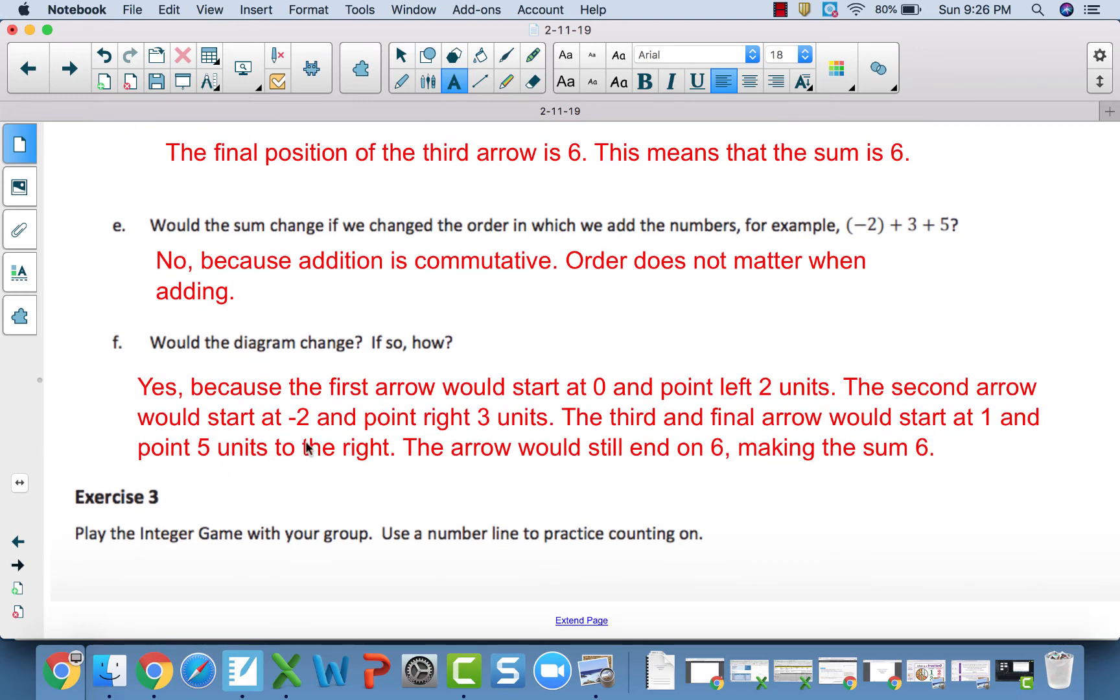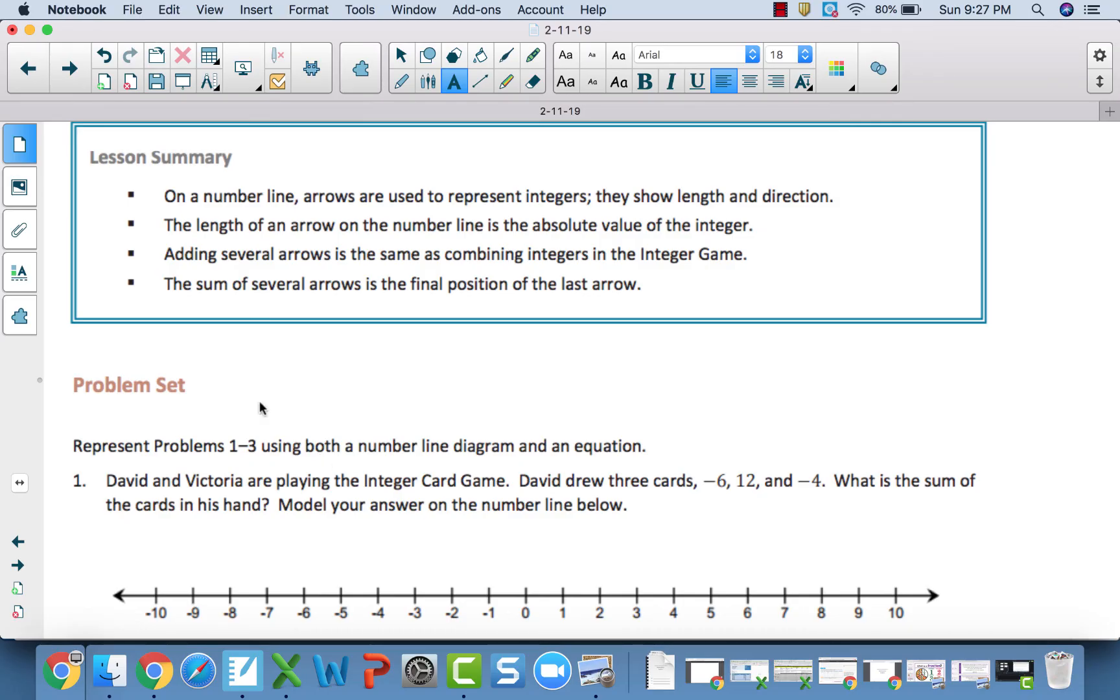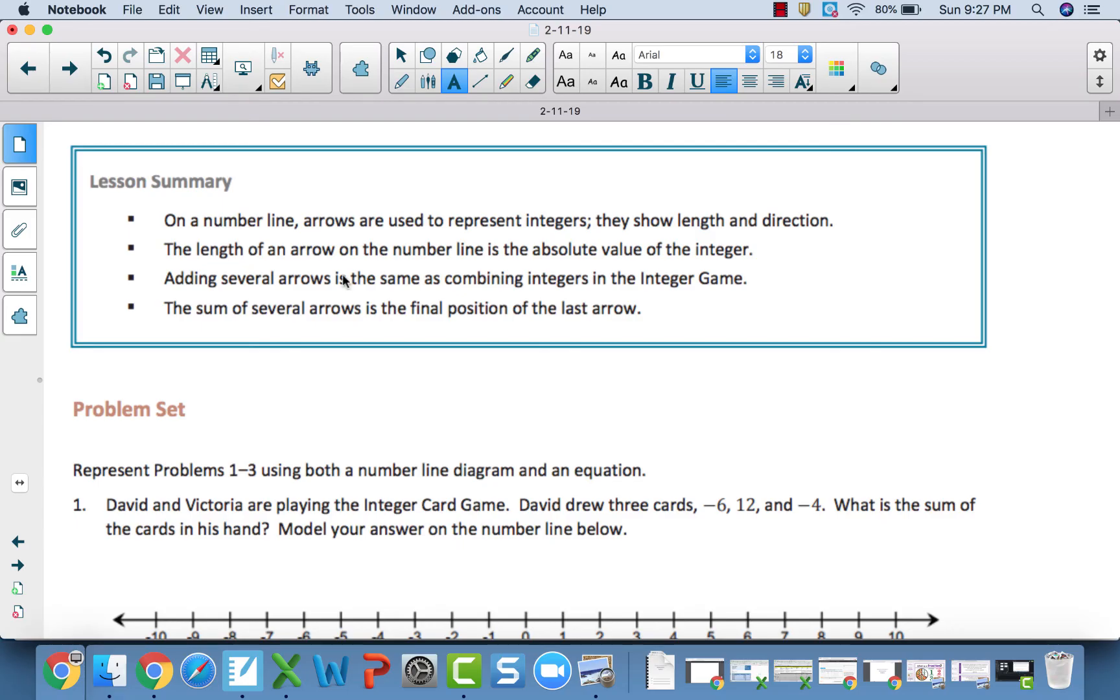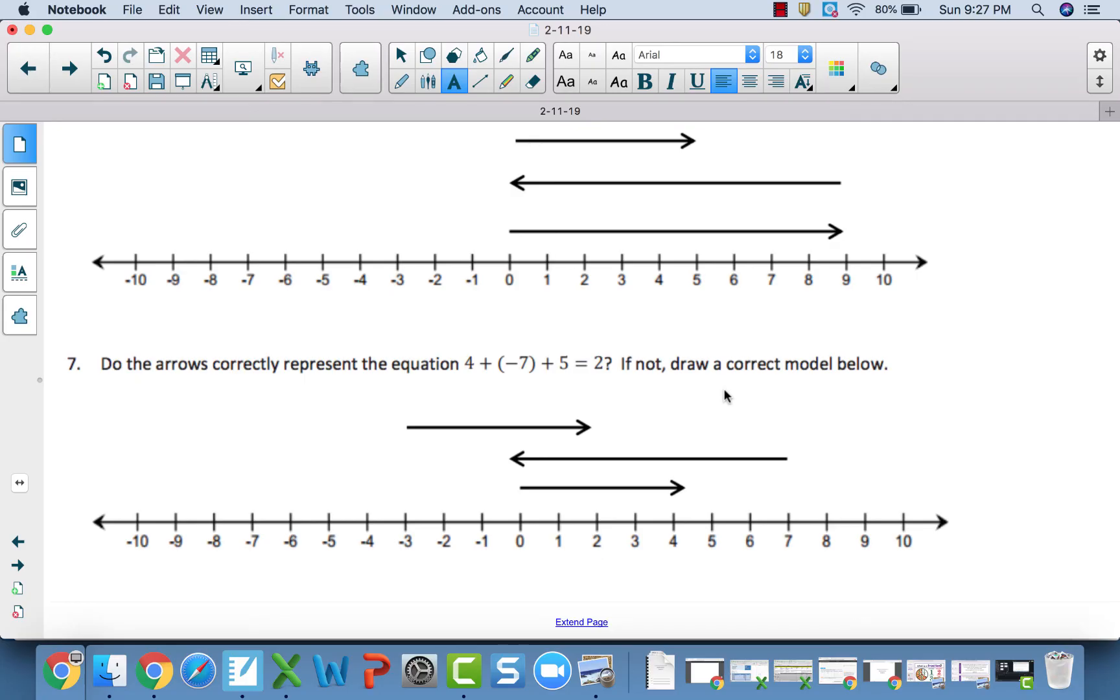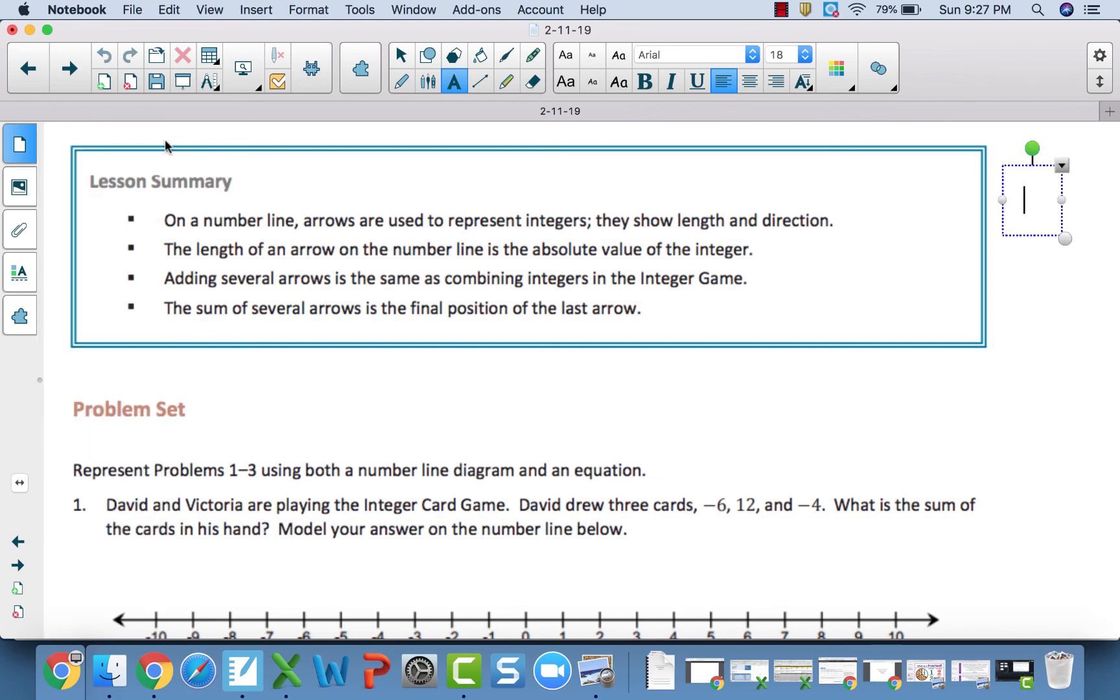Now, we're going to skip this part of the integer game. And we are going to move forward into the problem set. So, go through and answer these seven problem set questions. Just a reminder, before you start, you have a lesson summary up here. Arrows, we use those today to represent integers. Those arrows show length and direction. The arrows can also be called vectors. The length of an arrow in the number line is the absolute value. Adding several arrows is the same as combining integers. And the sum of several arrows is the final position. So, wherever that last arrow ends up is your answer. So, go through and answer these seven questions to the best of your ability. This is your chance to make sure that you are able to use arrows on the number line to add integers. So, once again, work through that. When you are done, come check the video. And that will wrap up this lesson on adding integers.